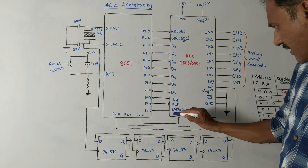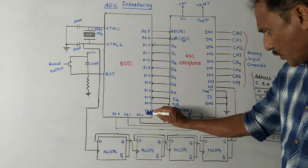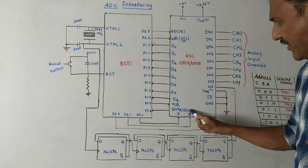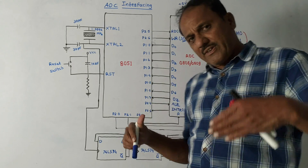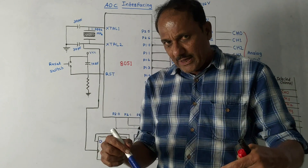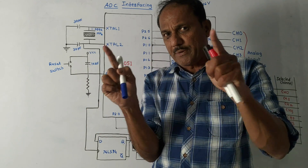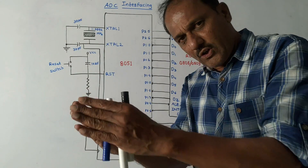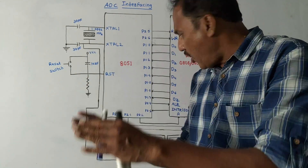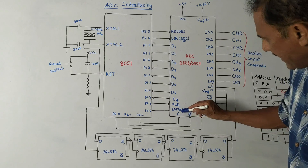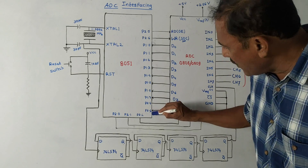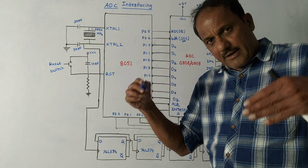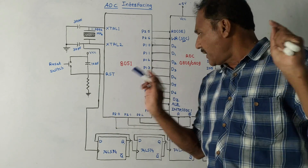Another important pin connected to port 2, pin P2.6 is INTR, that is End of Conversion (EOC). Every time while writing the program, you need to check the status of EOC. Depending on its status you will know whether the conversion of analog to digital is completed or not. This signal is generated and applied to pin P2.6, and accordingly the 8051 receives acknowledgement that the conversion is completed.